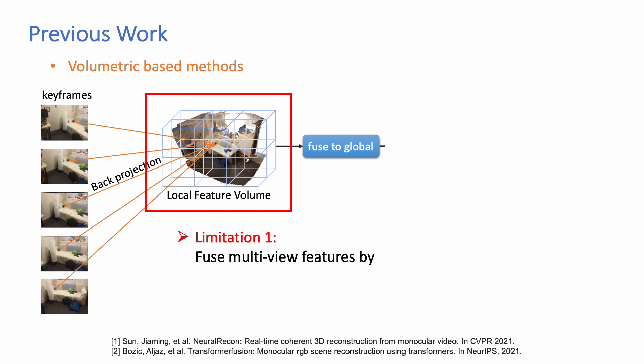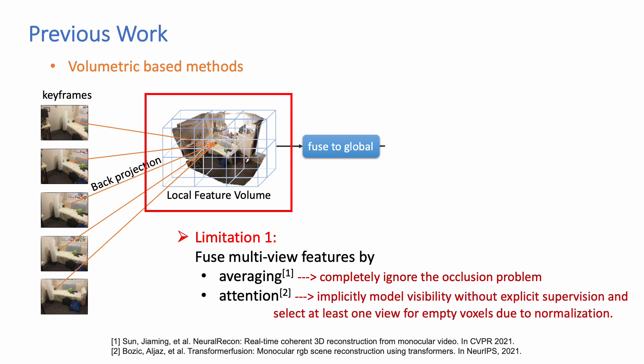However, in the local feature fusion, these methods aggregate multi-view features either by simply averaging them that completely ignore the occlusion problem in the scene, or apply the attention mechanism which implicitly models the visibility without explicit supervision and has to select at least one view for the empty voxels due to the normalization layers.